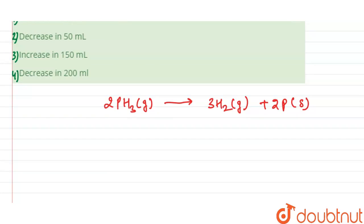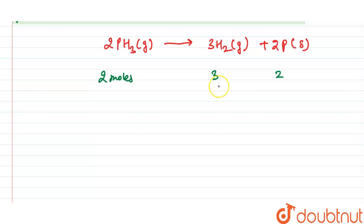Now we know that phosphorus is in solid state, so we don't consider its volume in the reaction. So in terms of volume, we can write two volumes of PH3 gives three volumes of H2 gas.